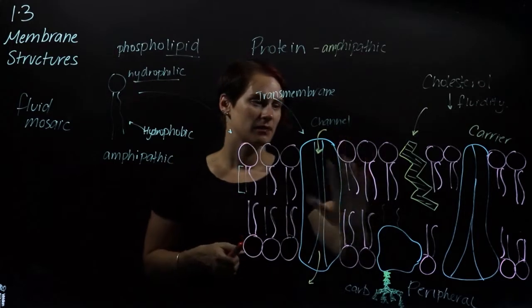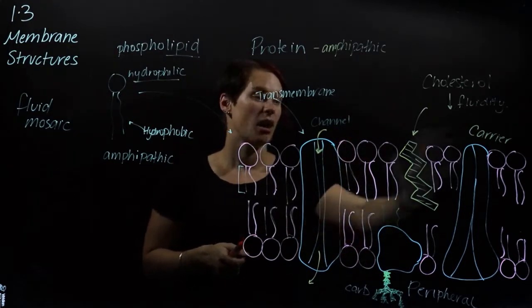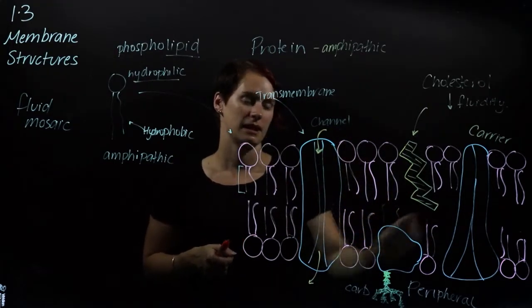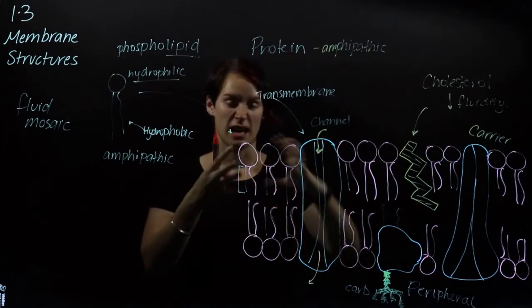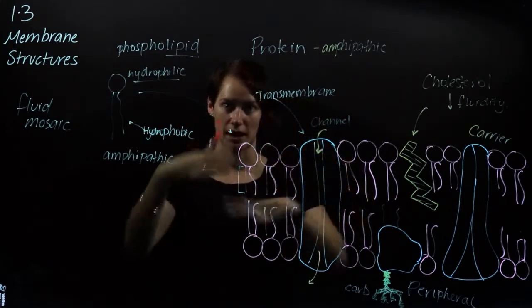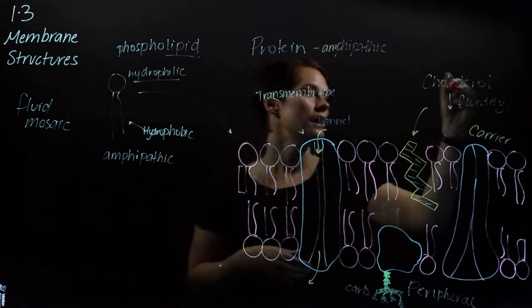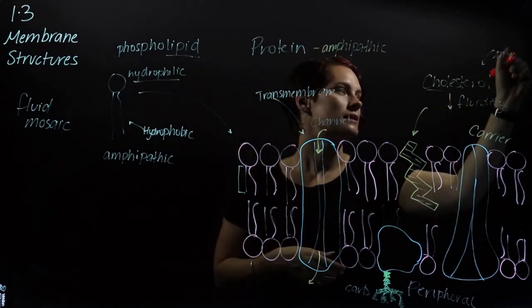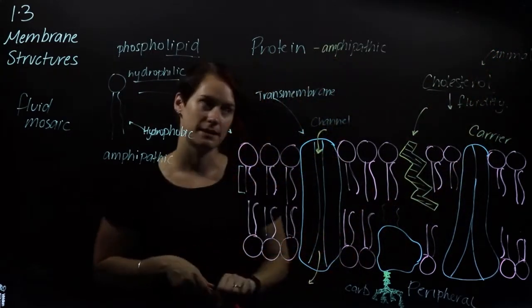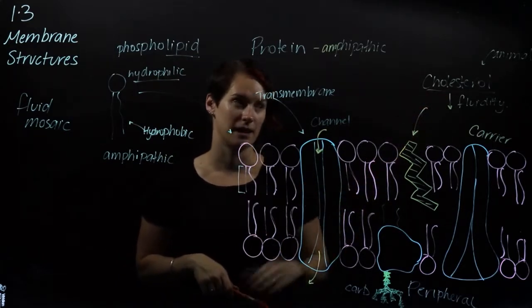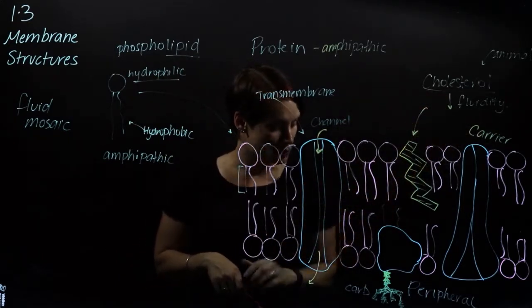Now what that means is that instead of allowing all these things to move around entirely all the time, these guys here sort of anchor the thing so it's not completely washing around too much. Okay, they do appear mainly in animal cells, they do not appear in plant cells, so that's a specific one there, and it's again decreasing the fluidity.